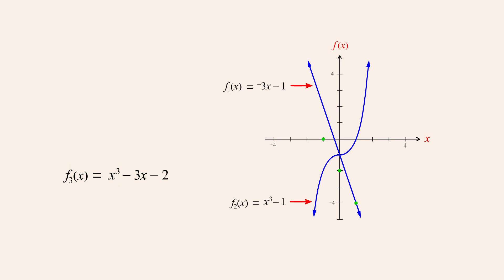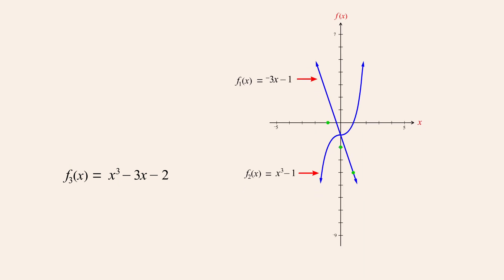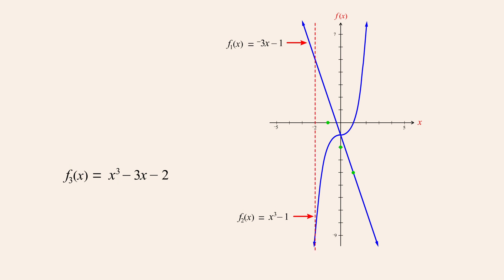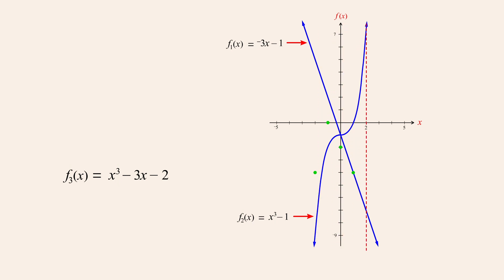Zooming out a little, we see that when x is negative two, the functions' values are five and negative nine, so their sum at that x-value is negative four. And when x is positive two, the values of the functions are seven and negative seven, so their sum at that x-value is zero.